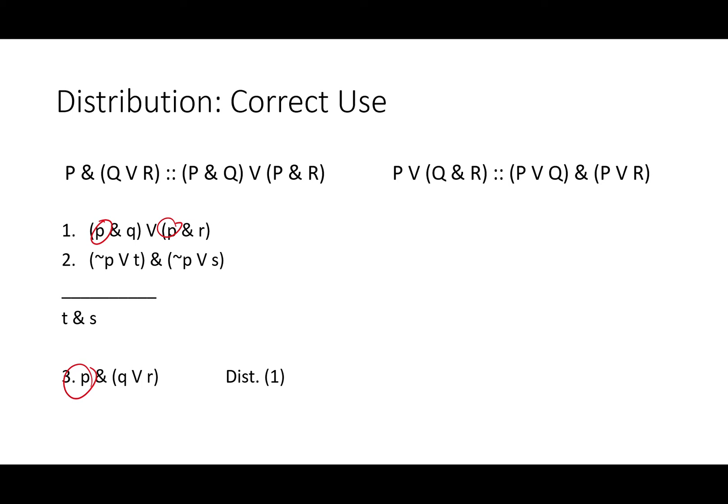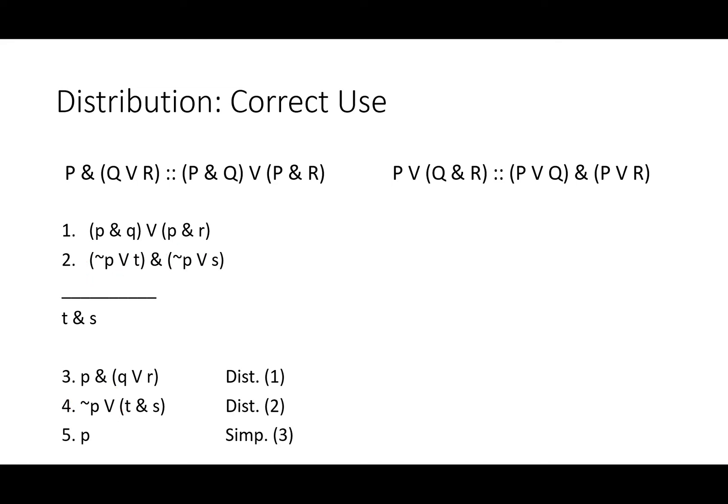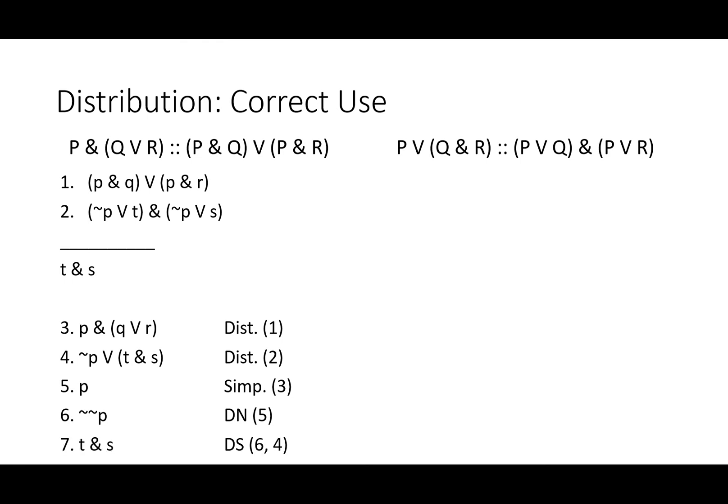We've taken 'P AND' out of our disjunction — going from '(P AND Q) OR (P AND R)' to knowing we've got P, and also either Q or R, even if we don't know which one. Since Q and R don't show up in line two or the conclusion, perhaps we won't end up caring about them at all — all the more reason to distribute out P. In the second line, we distribute out 'NOT P OR', giving us a choice between NOT P or T AND S. We can then simplify P from line three and double-negate it. Now, with disjunctive syllogism, we can reach our conclusion: T AND S.